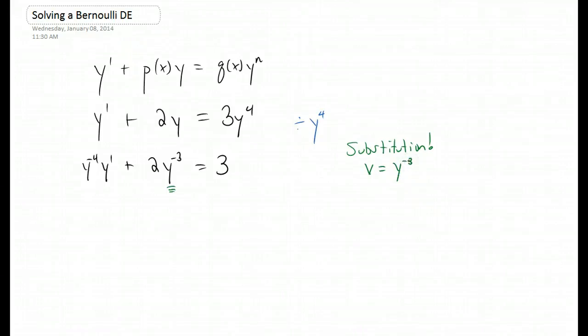Anytime we do a substitution like this, we're also going to need to take a derivative of our substitution variable with respect to the independent variable, so dv dx in this case. So y is actually a function of x, so we're going to do a power rule and we're going to do a chain rule, and this is actually an implicit derivative. So this is negative 3 y to the negative fourth power, and since y is a function of x, we're going to have a y prime in there as well.